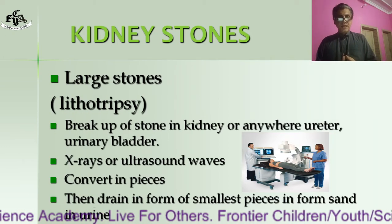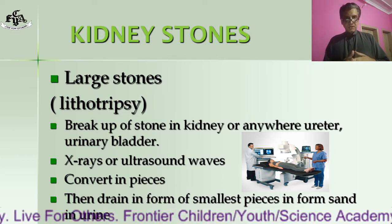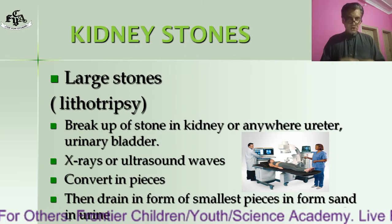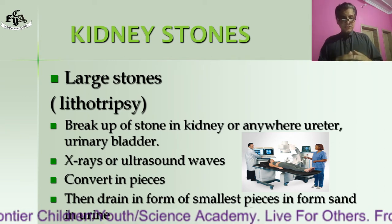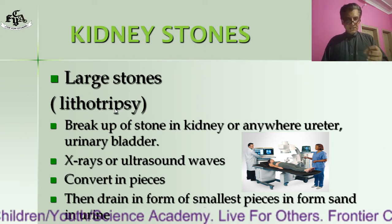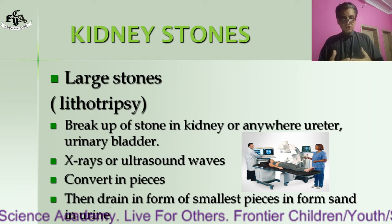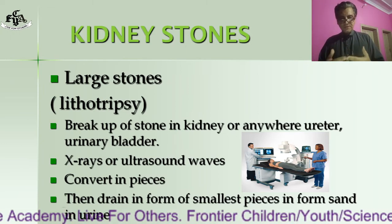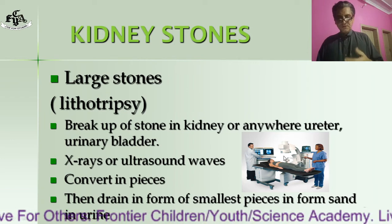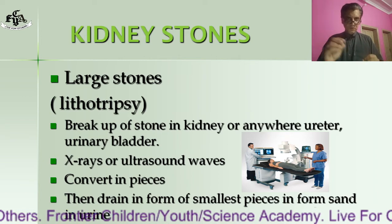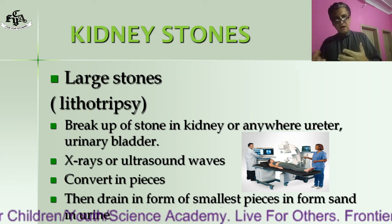Large stones cannot easily pass through the ureter and urethra, so first they are broken down into smaller pieces using a technique called lithotripsy. In this technique, stones are broken down into smaller pieces through ultrasonic or X-ray waves. These ultrasonic waves are concentrated on the kidney and the stones are converted into smaller pieces, then drained out in the form of small particles in the urine.